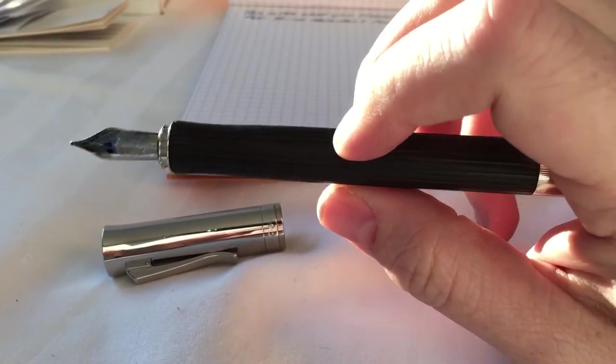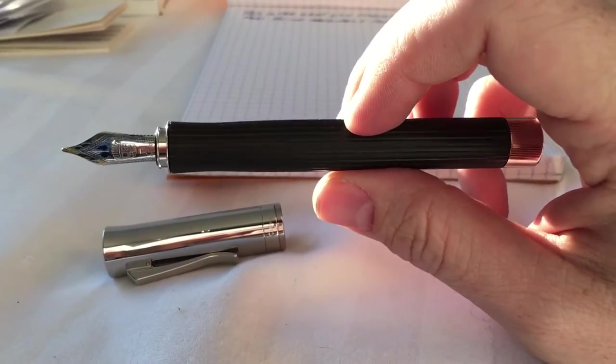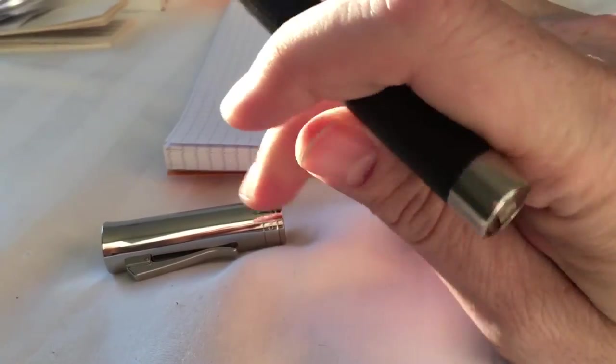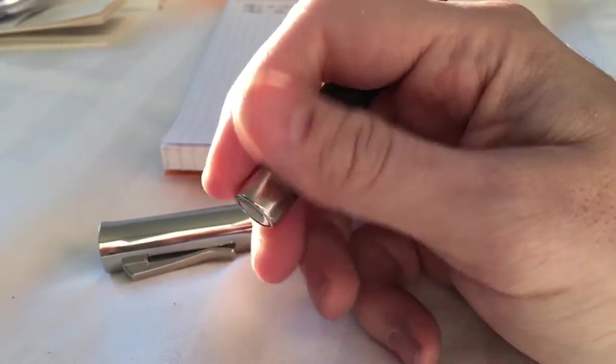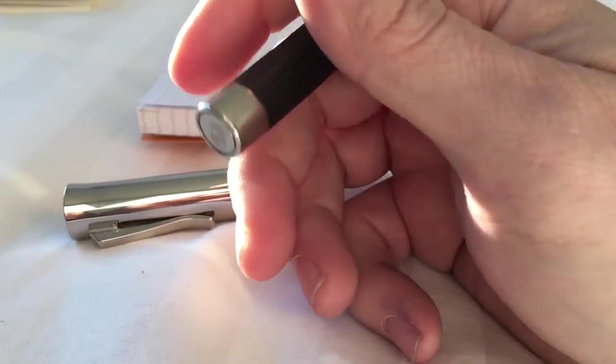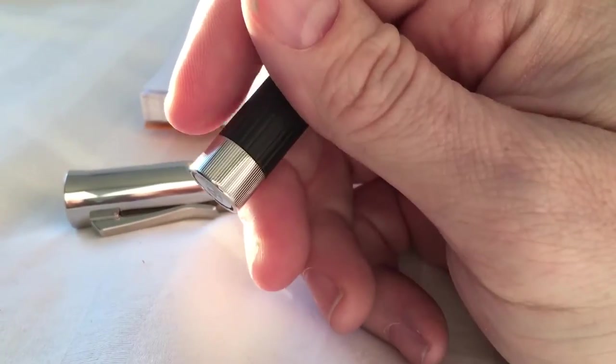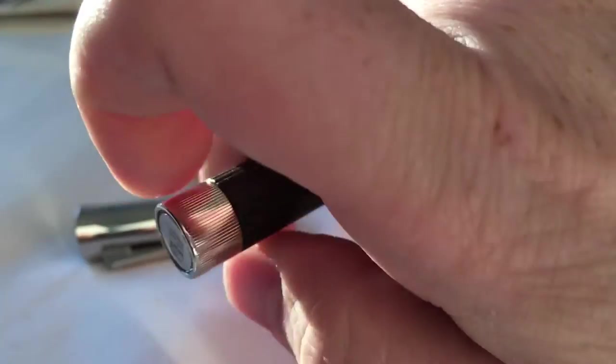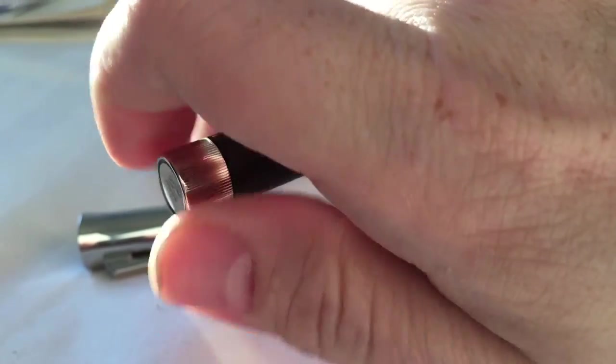This pen is an interesting filler—it's a converter filler pen. It's really cool how you access the converter. I'm doing this with one hand because I'm using my other hand to hold my camera, so bear with me. What you do is you screw this back piece—you unscrew here.